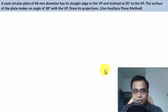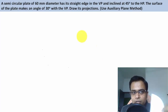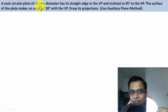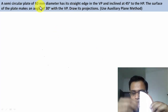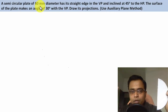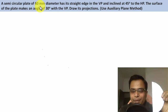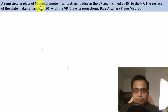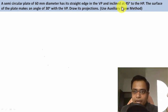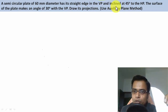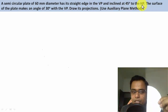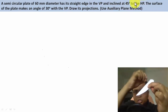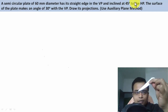Let's kick off with the problem description. There is a semi-circular plate with a diameter of 60 millimeters. The straight edge is in the VP, so make sure that whenever you make this orthographic projection the straight edge is always in contact with the vertical plane. Apart from that, the straight edge is also inclined at an angle of 45 degrees to the HP.